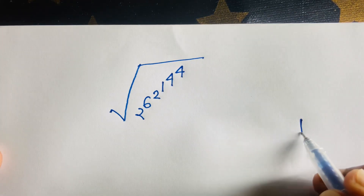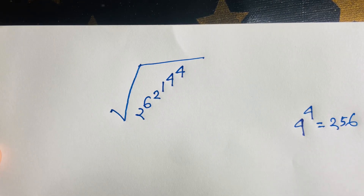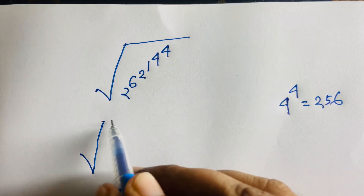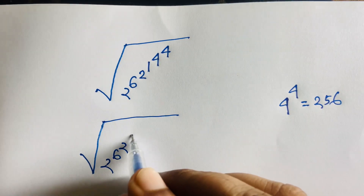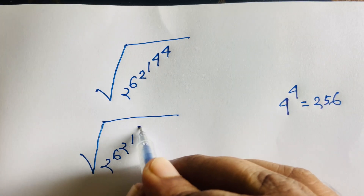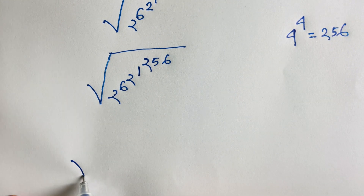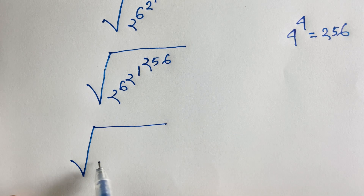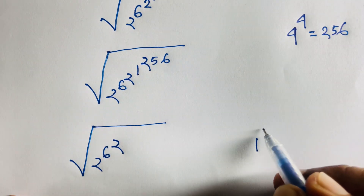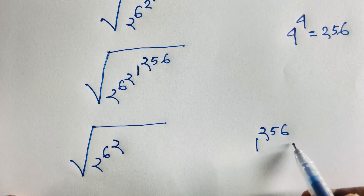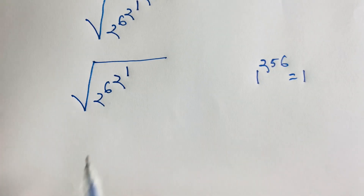First, we have 4 to the power 4, which equals 256. Then this equation becomes a square root of 2 to the power 6, and 6 to the power 2, and here 1 to the power 256. Since 1 to the power 256 equals 1, we simplify that term to 1.